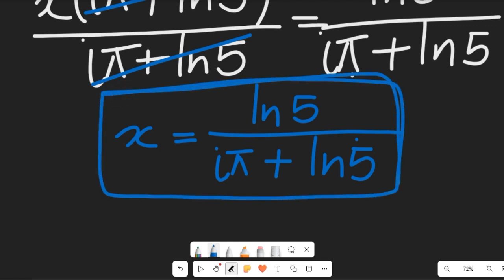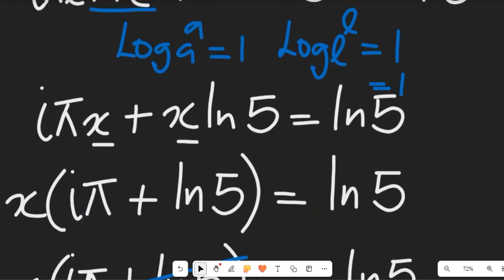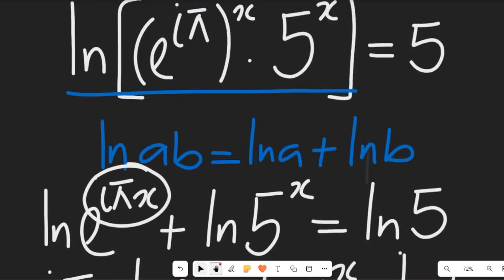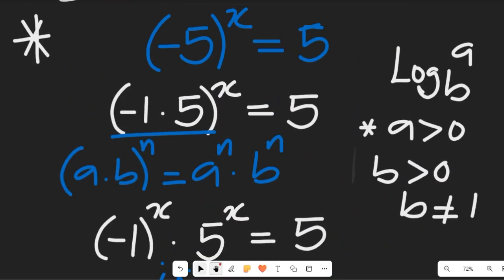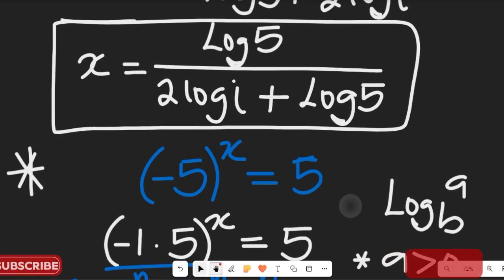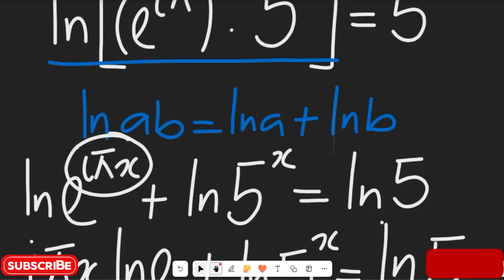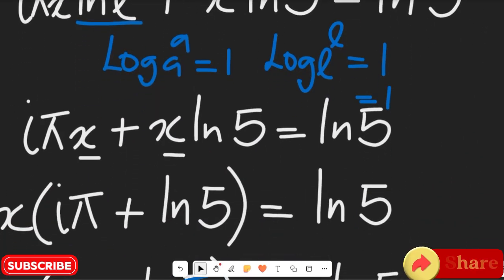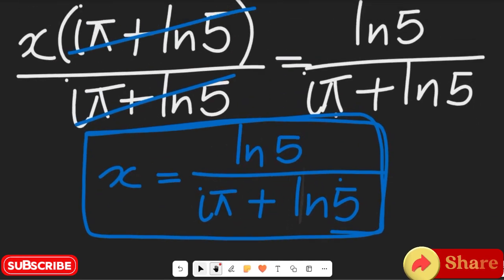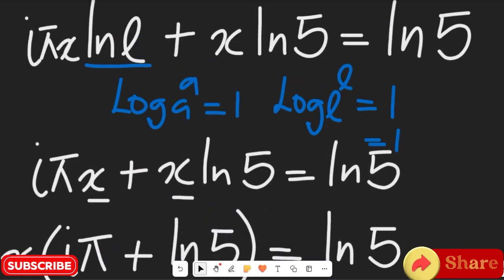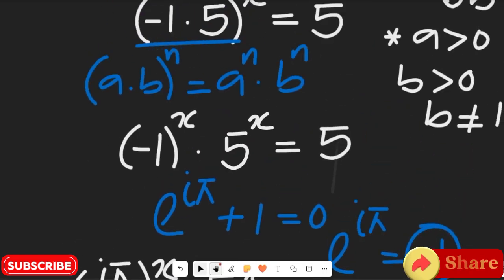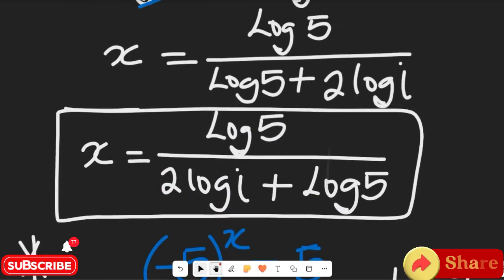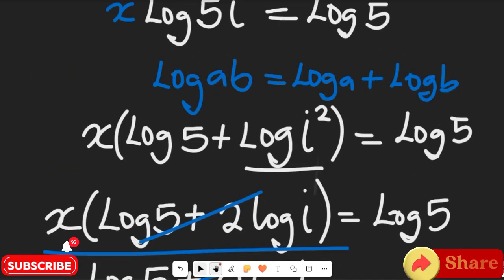Using Euler's formula we get x equals ln 5 divided by (j·π plus ln 5), and you can see this solution is similar to the solution we got using logarithms and the complex value notation — very easy! If you enjoyed watching this math solution, don't forget to give it a thumbs up, share it with friends and colleagues, and remember to subscribe to my channel for more simplified math content. Thanks so much for watching!